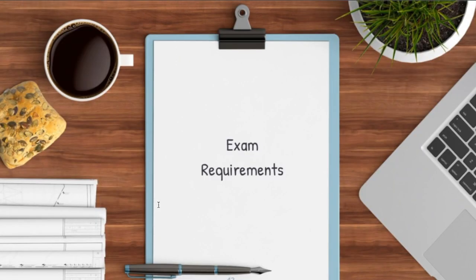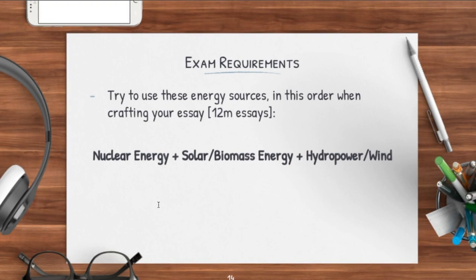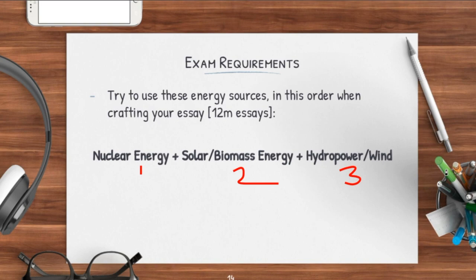Now let's move on to your exam requirements. The first exam requirement tends to focus on 12-mark essays — for this topic, 12-mark essays will usually come out, and 20-mark is very hard to come out. Whenever you write a 12-mark essay, include three alternative energy sources — namely nuclear energy, solar energy, and hydropower. These are the three easiest, but it's completely up to you. Just make sure that in 12-mark essays you have three of these alternative energy sources, and then explain them and give examples.